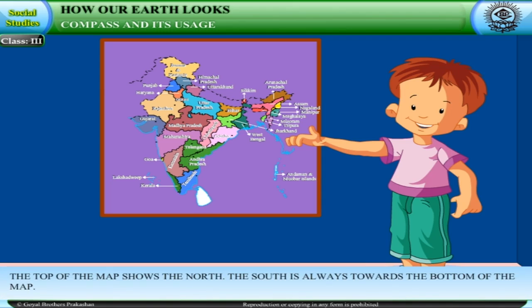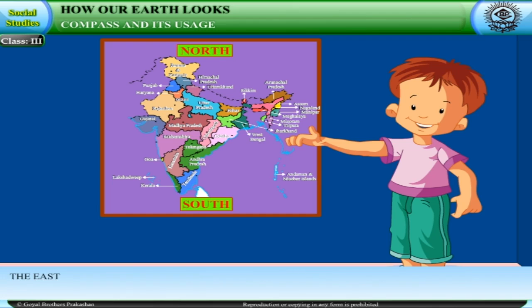The top of the map shows the north. The south is always towards the bottom of the map. The east is to your right and the west is to your left.